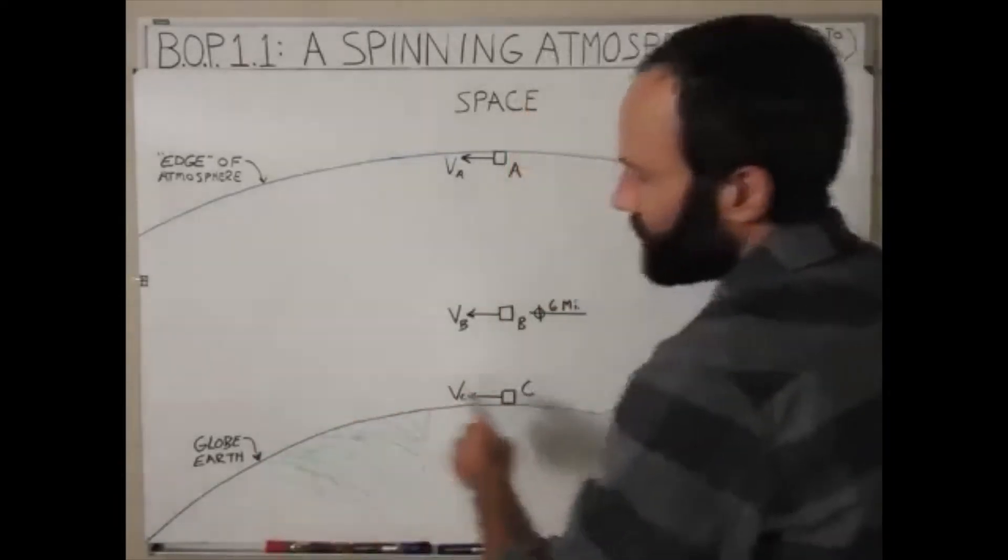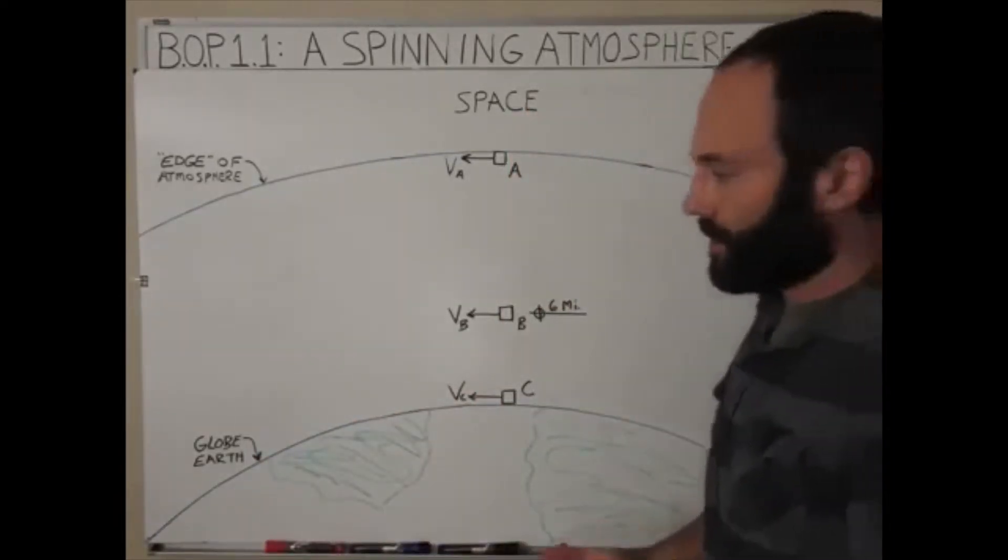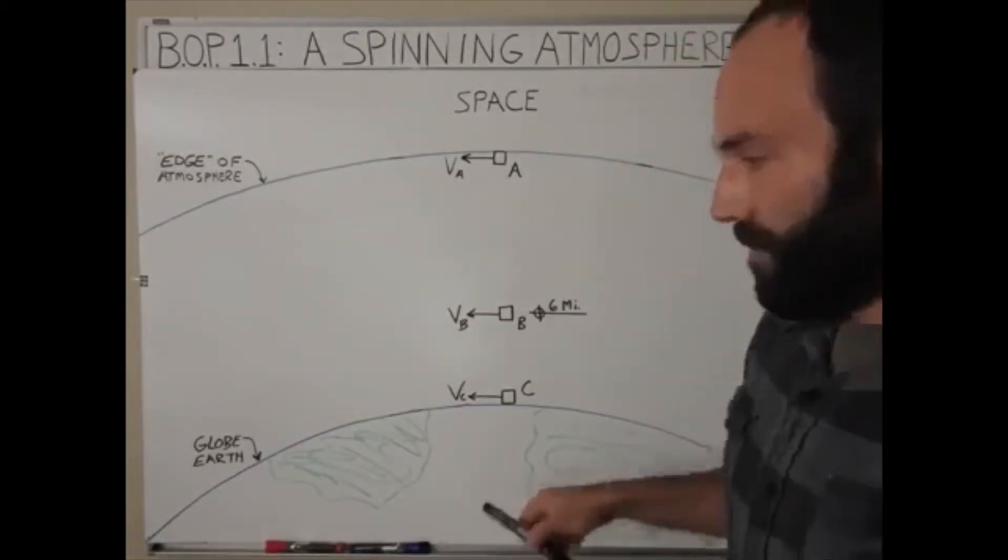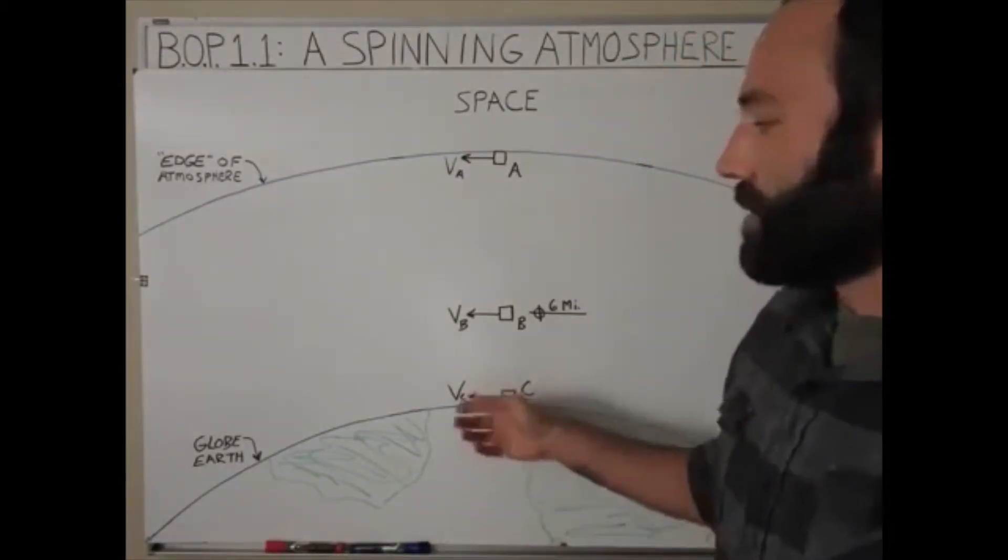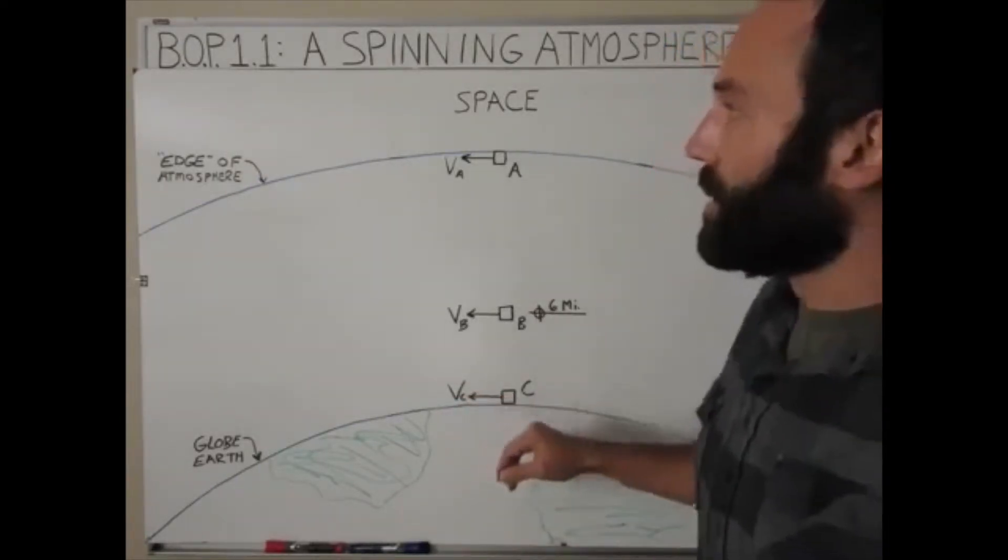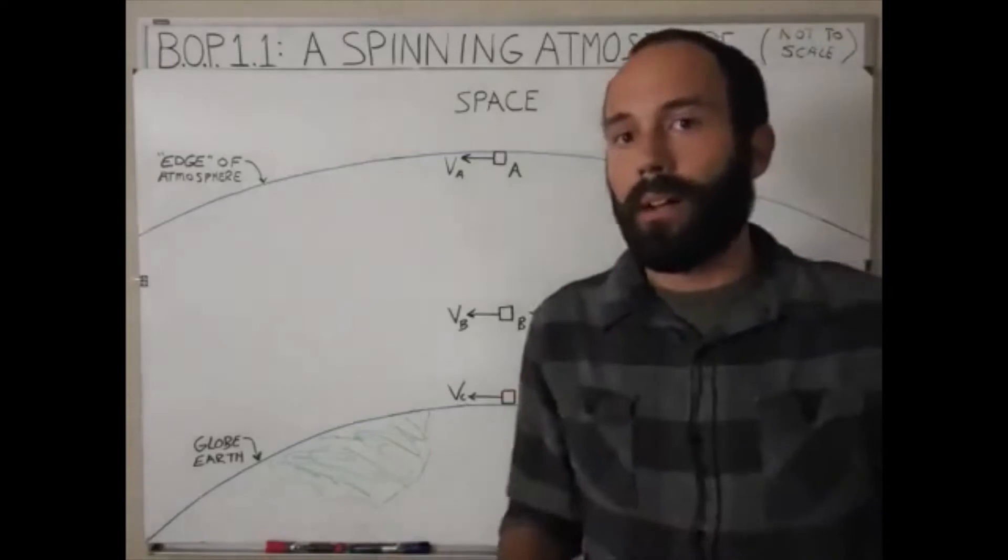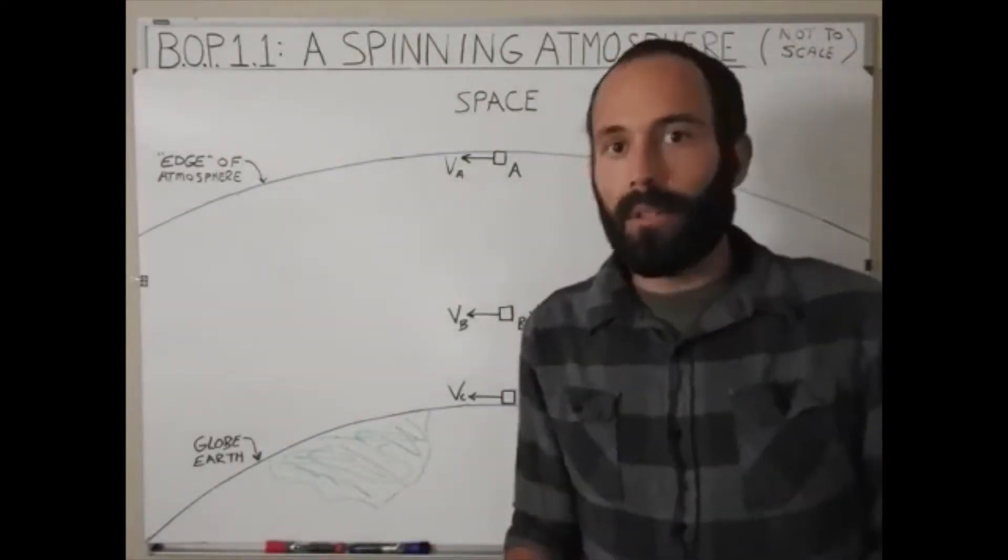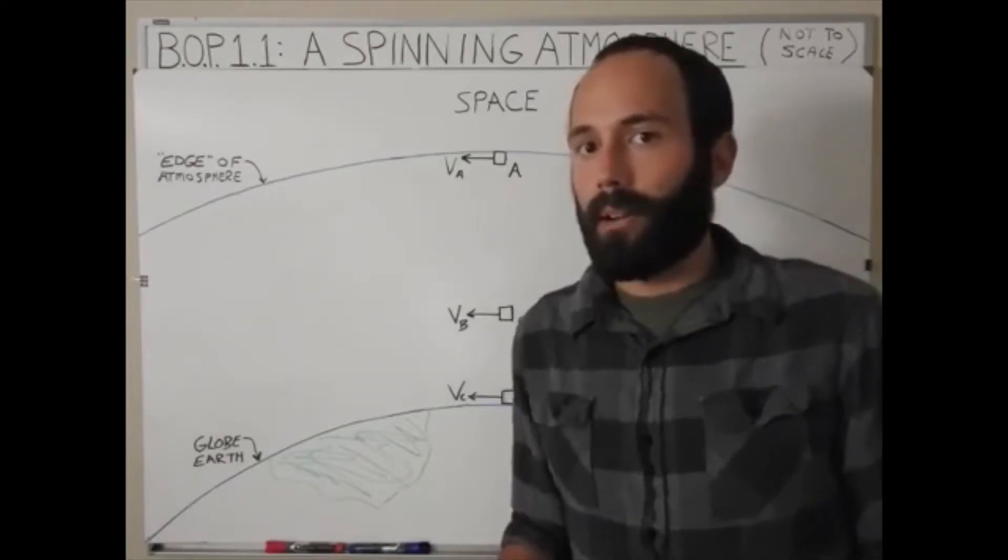So here's the Earth down here, and let's say that this line right here is the equator. When you're looking down on it, the equator's right here, so we're just going to say this line is the equator, and then this is the edge of the atmosphere up here, and then there's space out here. This is obviously not to scale, this is just conceptual. So at the equator, the circumference of the Earth is roughly 25,000 miles.